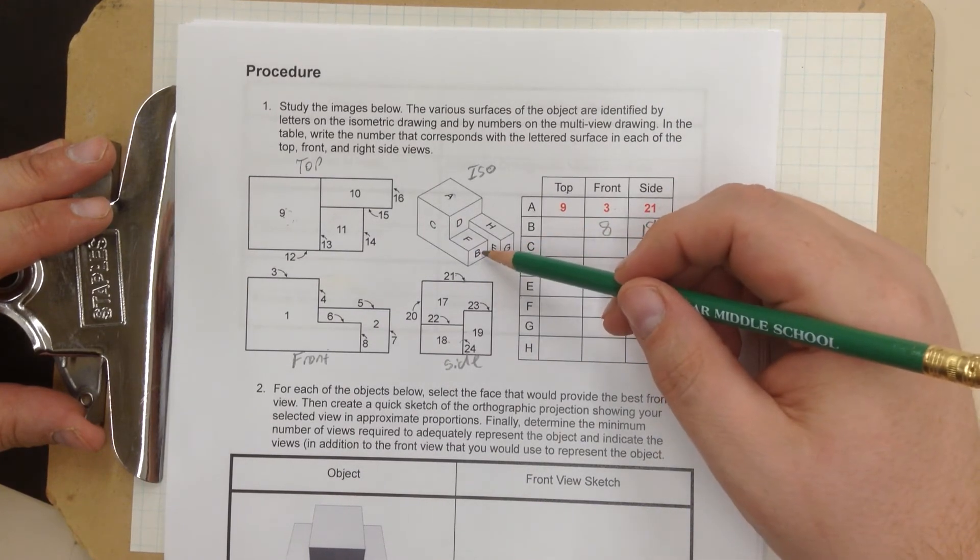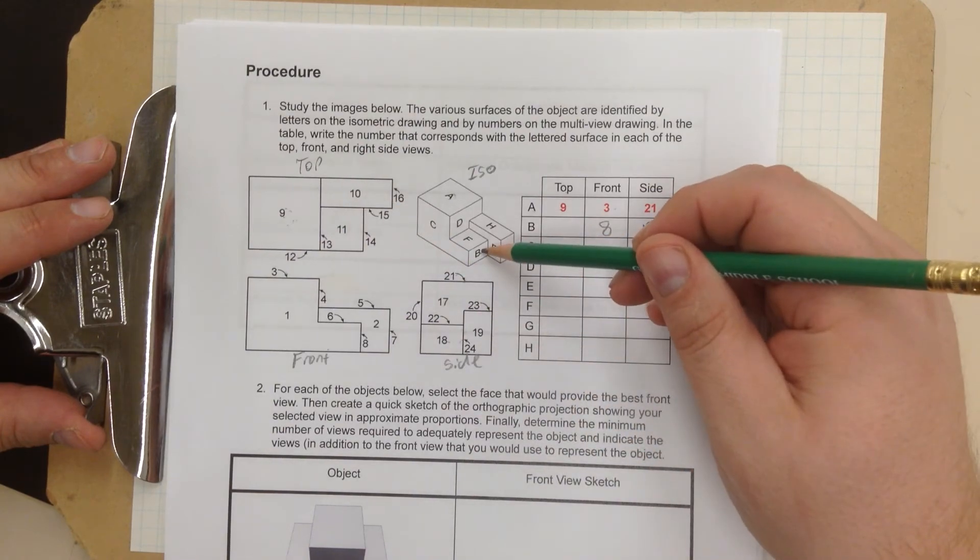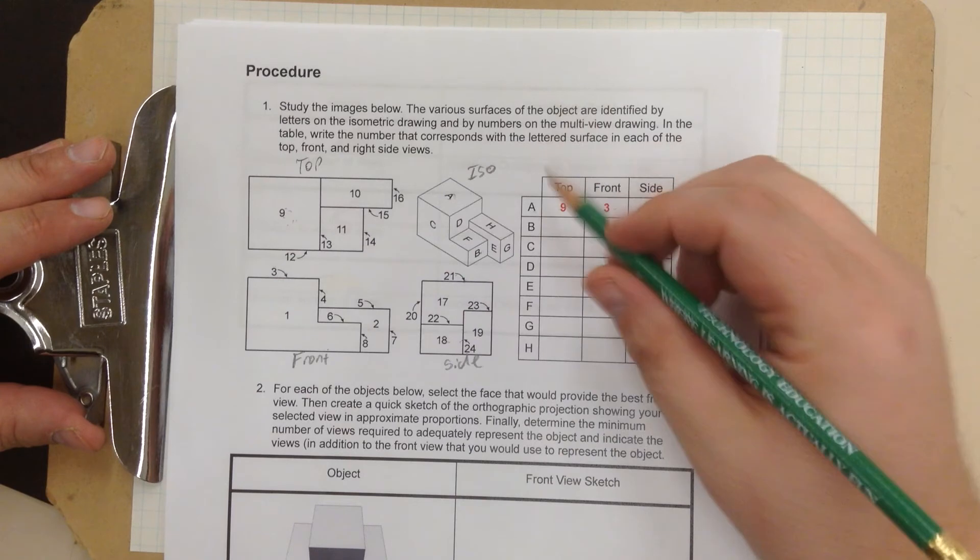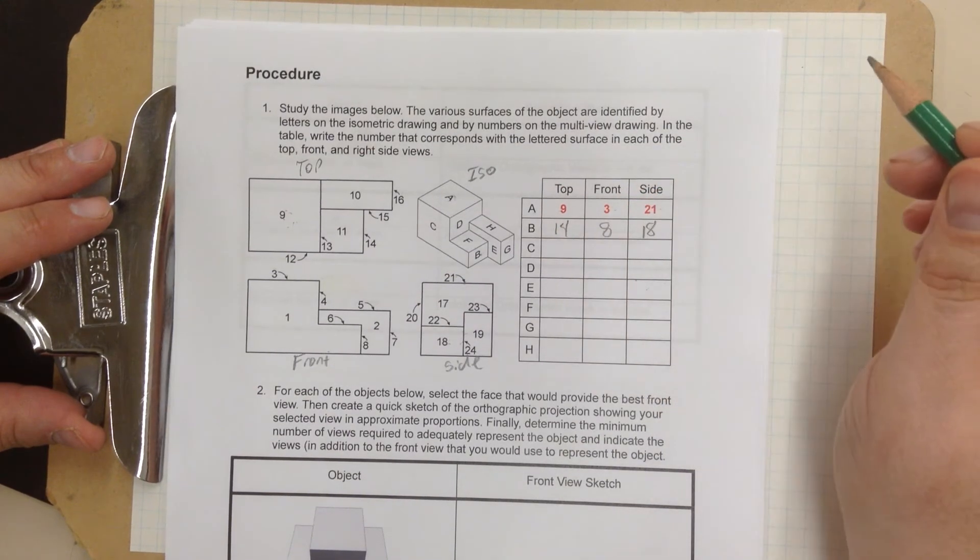Now if I check out B in the top view, there's that point. And number 14 is going to be speaking directly to it. So right there.